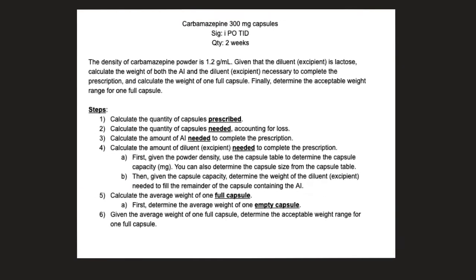Here is an example prescription written for carbamazepine 300mg capsules — brand name Tegretol, an anticonvulsant or anti-seizure medication. It's written for one by mouth, three times a day, and the quantity is two weeks. We know the density of carbamazepine powder is 1.2 g/mL and the excipient or diluent is lactose. We're going to calculate the weight of both the AI and the diluent necessary to complete the prescription, the weight of one full capsule, and the acceptable weight range.